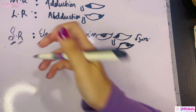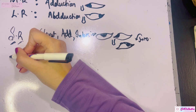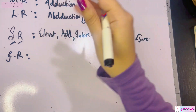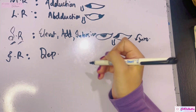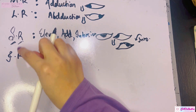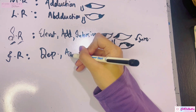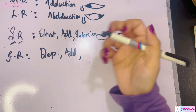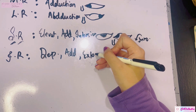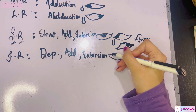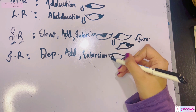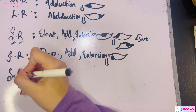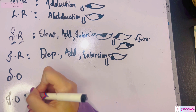The inferior rectus reverses all of these movements: it causes depression of the eyeball, adduction — as all recti cause adduction — and extorsion, since all inferiors do extorsion. So the inferior rectus produces an eyeball looking down and medially. Next we come to the superior and inferior obliques, which is the confusing part.